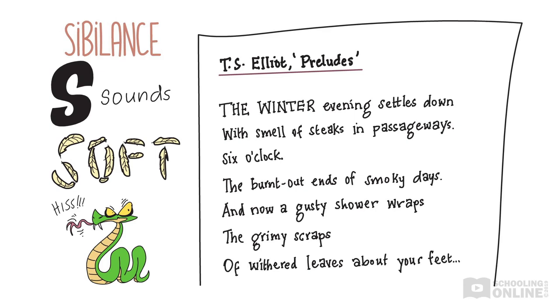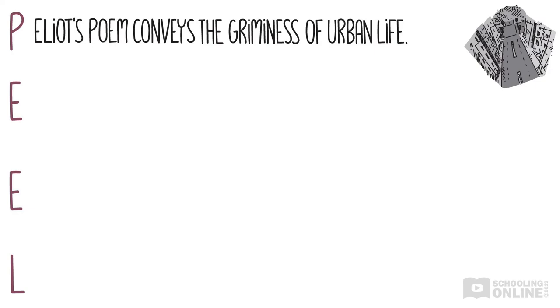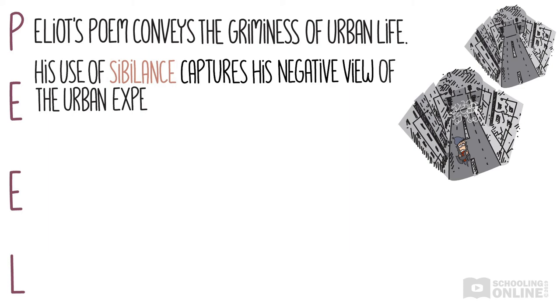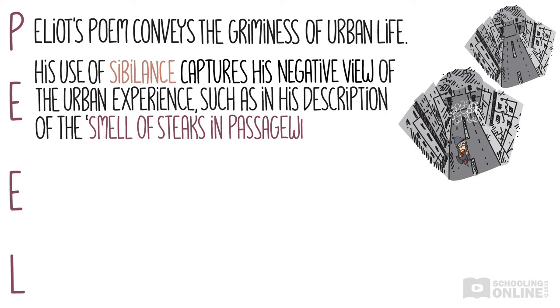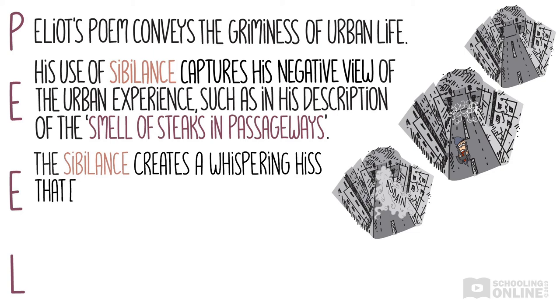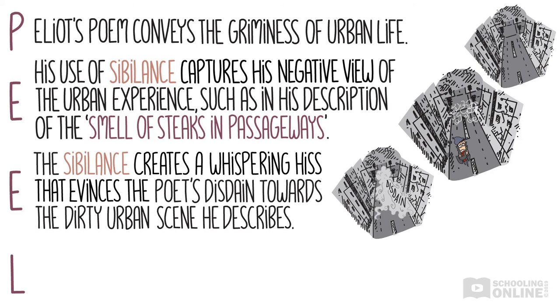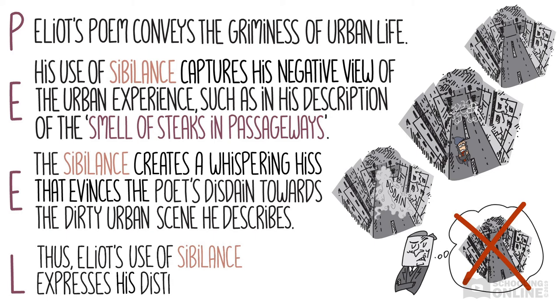'And now a gusty shower wraps the grimy scraps of withered leaves about your feet.' Let's use a PEEL paragraph to get our point across. Eliot's poem conveys the griminess of urban life. His use of sibilance captures his negative view of the urban experience, such as in his description of the smell of steaks in passageways. The sibilance creates a whispering hiss that evinces the poet's disdain towards the dirty urban scene he describes. Thus, Eliot's use of sibilance expresses his distaste for city life.